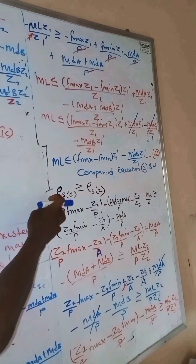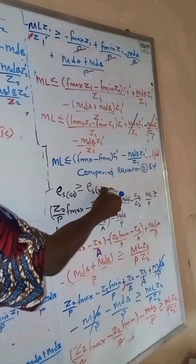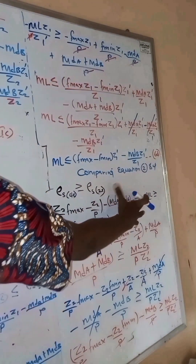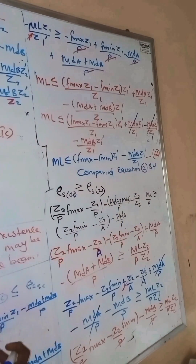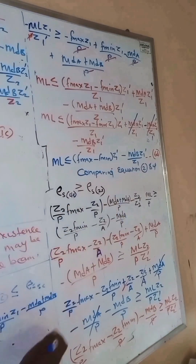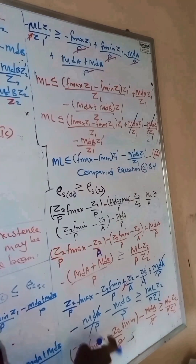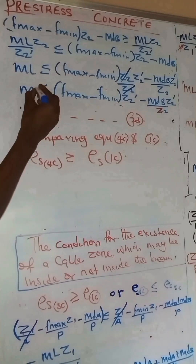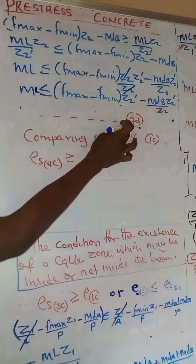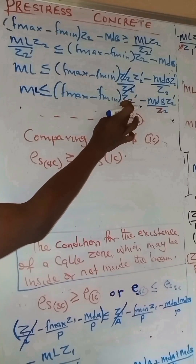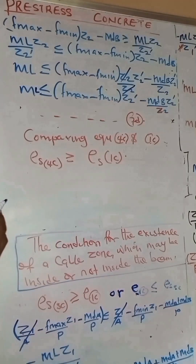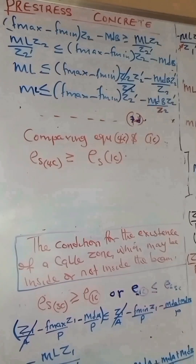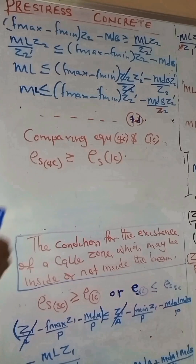Next we compare equation 2c and equation 4c, where equation 4c is greater than equation 2c. Using the expression for equation 4c and equation 2c, collecting like terms and solving for M_L, we obtain: M_L = (f_max − f_min) × Z2_composite − M_DB × Z2_prime/Z2, where Z2_composite is the sectional modulus with respect to fiber two of the composite section. We call this equation 7d.